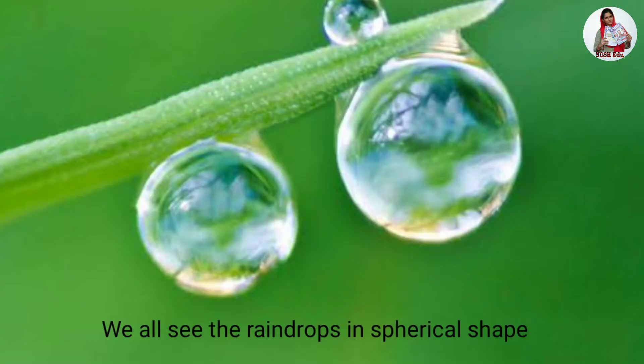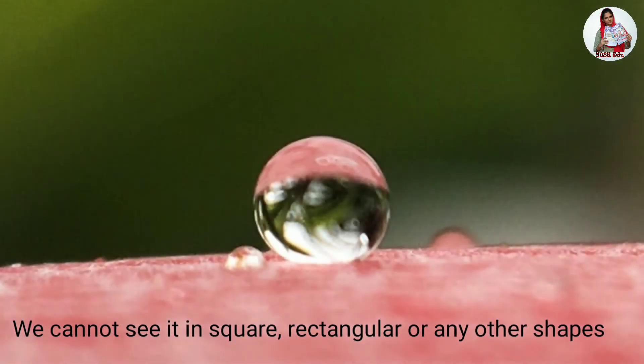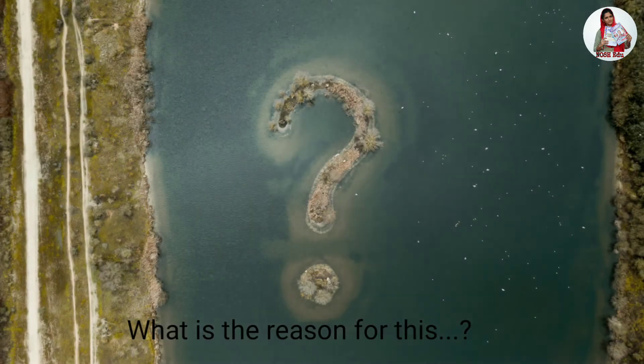We all see the raindrops in spherical shape. We cannot see it in square, rectangular, or any other shapes. What is the reason for this?